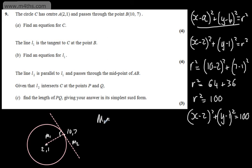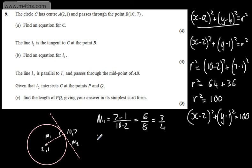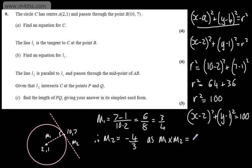M1 is the change in y over the change in x, which is (7 − 1) / (10 − 2) = 6/8 = 3/4. M2, the gradient of the tangent, will be the negative reciprocal of this: M2 = −4/3, since M1 × M2 = −1 for perpendicular lines.